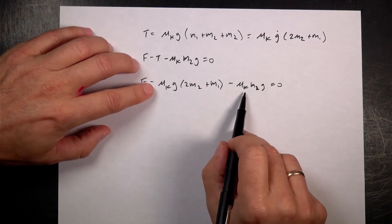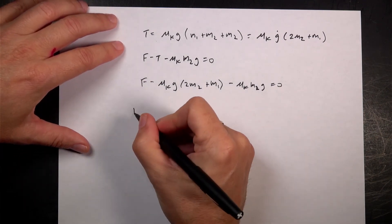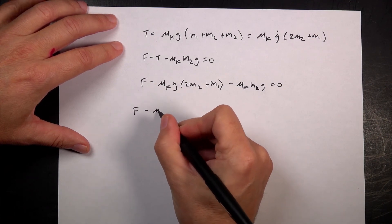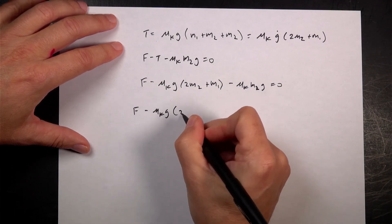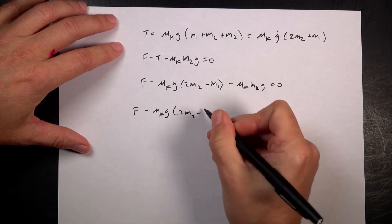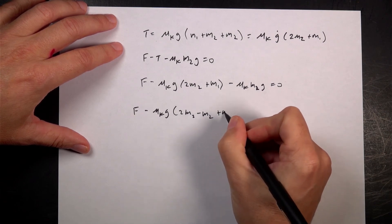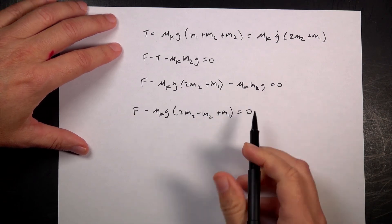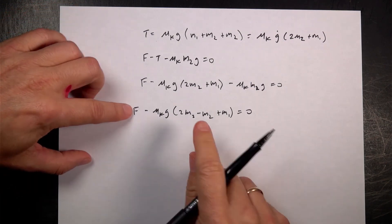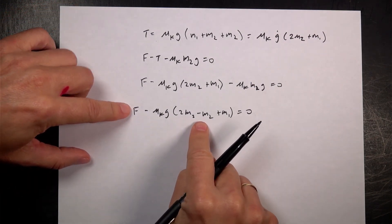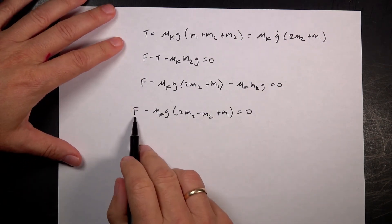So you can see I actually can combine all these terms together. And I get F minus mu K G (2M2 + M2 + M1) equals 0. And so this is just going to be 3M2. So now I can solve this.